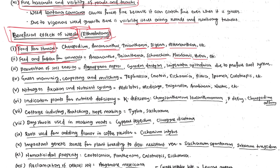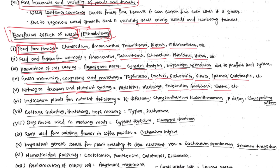Certain weeds can be used as feed or fodder for animals, such as Amaranthus, Trianthema, Echinochloa, Phalaris, and Avena. Some weeds prevent soil erosion due to their profuse root systems — Agropyron repens, Cynodon dactylon, and Imperata cylindrica bind soil effectively, reducing the impact of raindrops and runoff. Certain weeds like Tephrosia, Croton, Echinochloa, Pistia, Ipomoea, and Calotropis can be used for green manuring, composting, and mulching as they decompose easily.